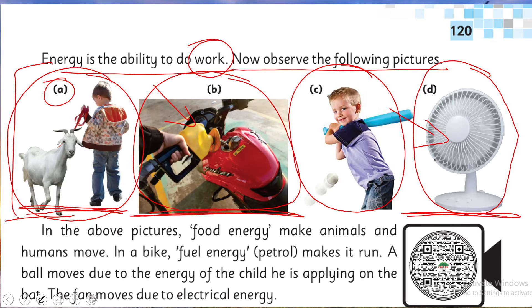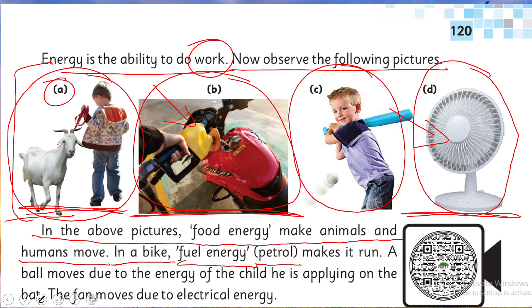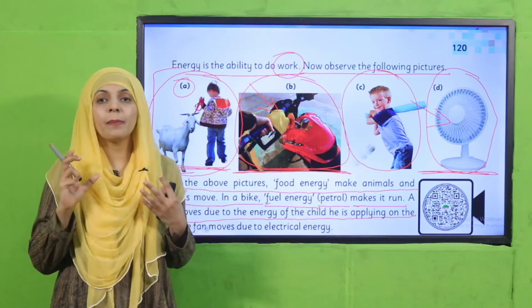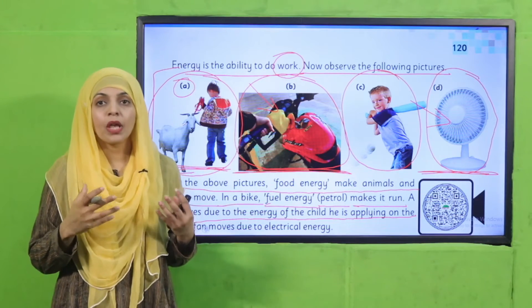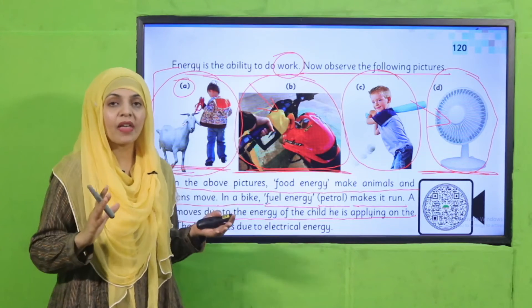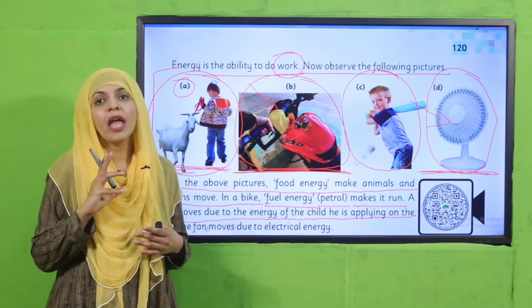Let's start the reading. Energy is the ability to do work. Food energy makes animals and humans move. In a bike, fuel energy — petrol — makes it run. A ball moves due to the energy the child is applying on the bat. The fan moves due to electrical energy. So everything moves with energy. Energy is the ability to do work — both living and non-living things need energy.